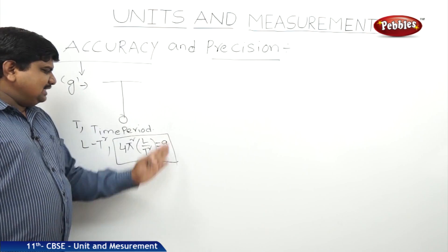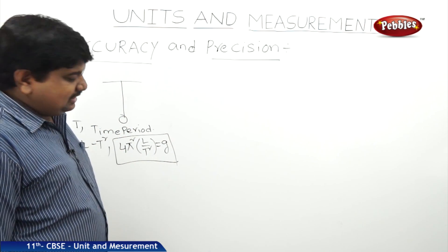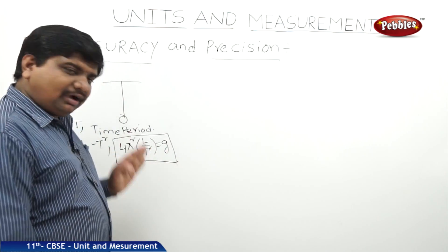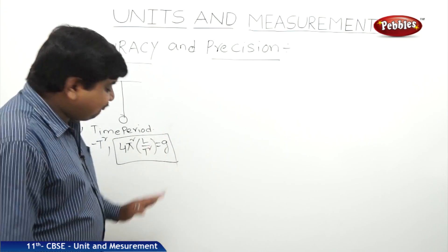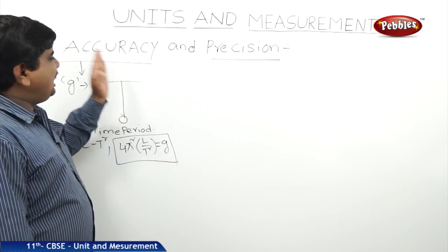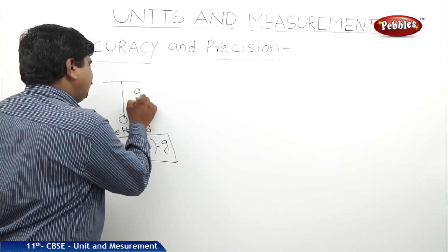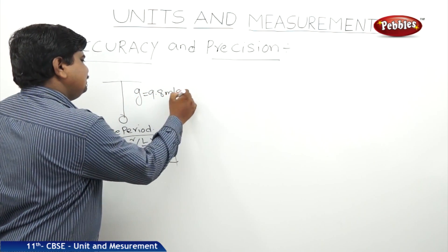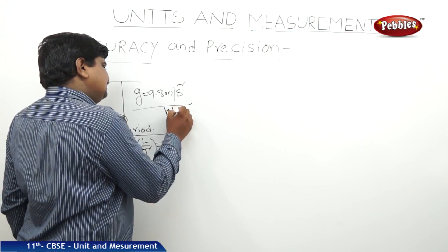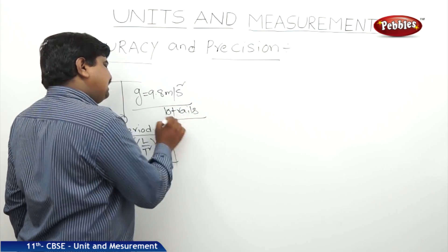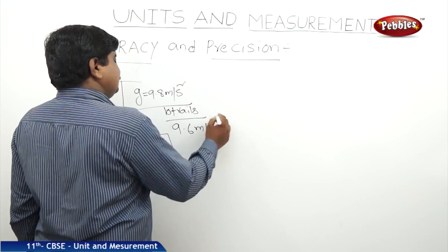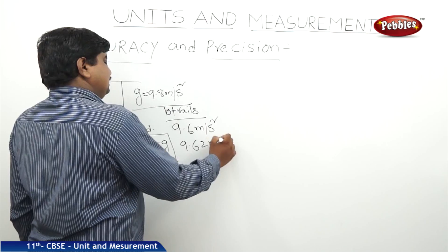What is the meaning of accuracy? Accuracy means: if a value was measured or found during an experiment, how close that value is to the original — that is accuracy. The g value is 9.8 m/s². Suppose during this experiment, over 10 trials, the average value obtained is 9.62 m/s².